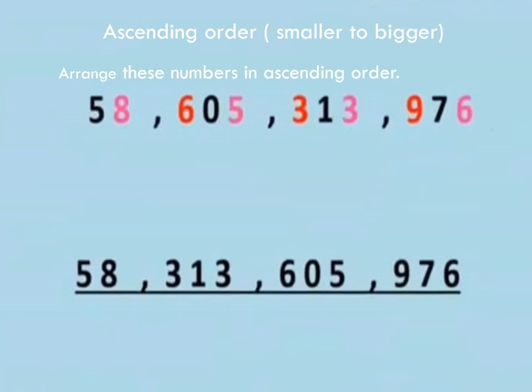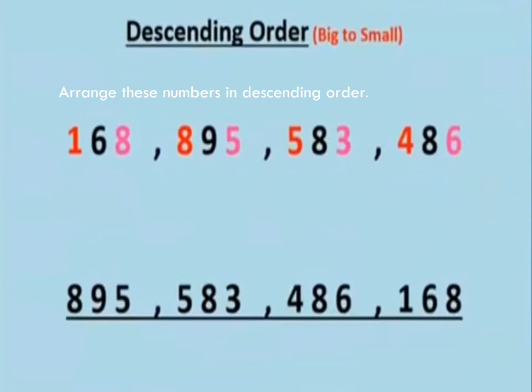Now come to the next topic, that is descending order, means big to small. So we have to arrange these numbers: 168, 895, 583, 486 in descending order. First we check in hundreds. In hundreds we have the biggest number 895, then 583 is smaller than 895, then 486 is smaller than 583, and the smallest number is 168.